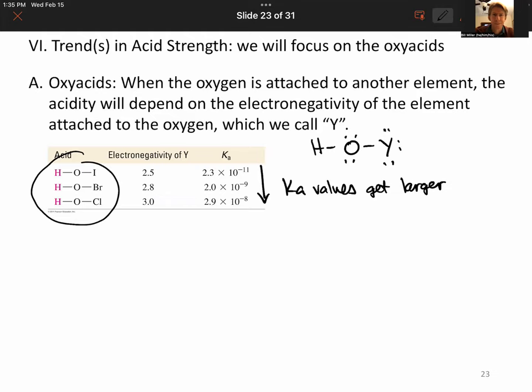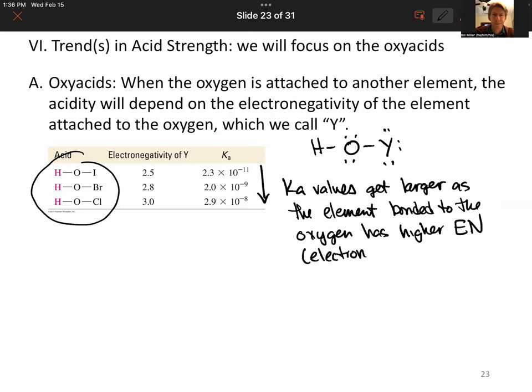And we're going to start to interpret this as a pattern. And this is a known pattern. The pattern is that Ka values get larger as the elements bonded to the oxygen has higher electronegativity. My abbreviation for electronegativity is EN, and I'll still write it out. But we'll talk about electronegativity quite a bit here.